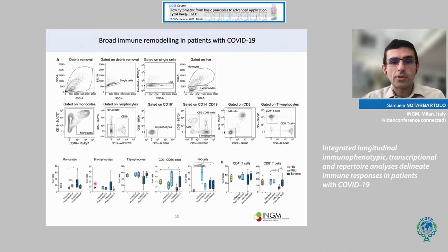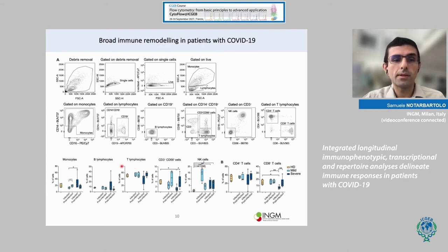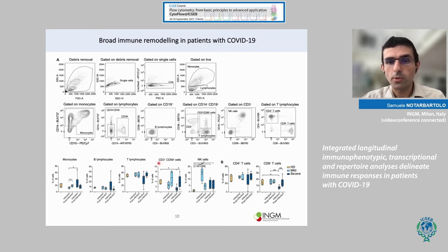Going back to our patient cohorts, what we observed was a broad immune remodeling of immune populations in peripheral blood. Especially in patients with mild disease during infection, we observed a strong increase in the frequency of natural killer cells. While in patients with severe disease, we observed an increase in the frequency of monocytes and a reduction of CD3/CD56 double-positive cells, and also of T lymphocytes — mostly confined to CD8 T cells.